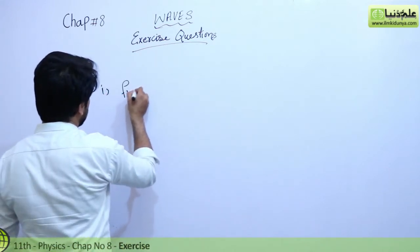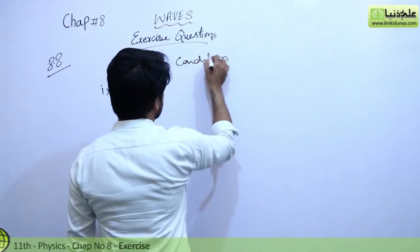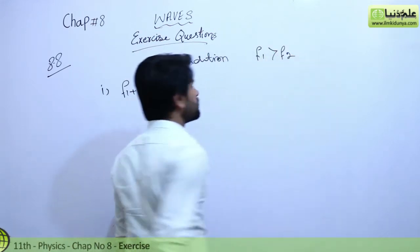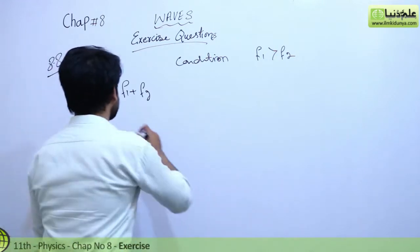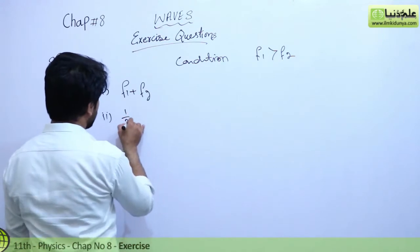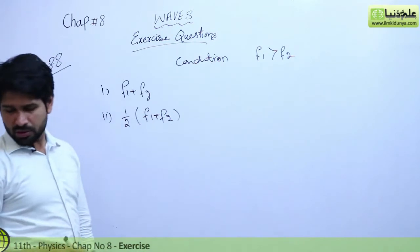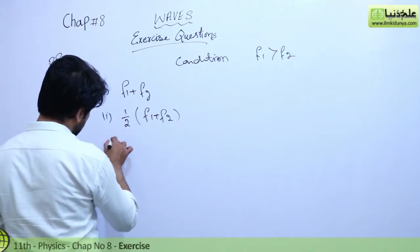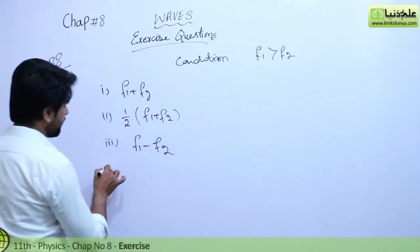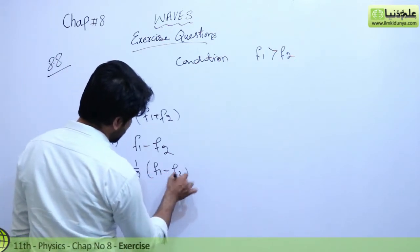The first choice is f1 plus f2. The second choice is one-half of the sum of the two frequencies. The third is the difference of the frequencies, f1 minus f2. And the fourth is half of the difference of the frequencies f1 and f2.